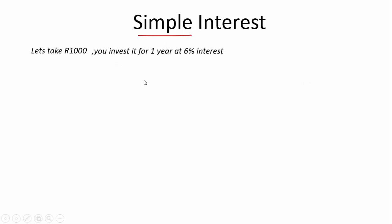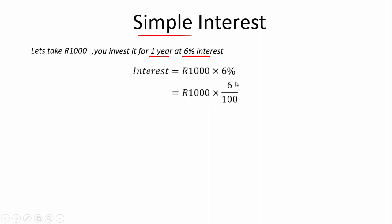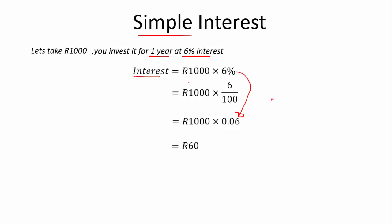Let's take 1,000 Rand and invest it for one year at 6% interest. So how much is going to be there after one year? The interest is going to be 1,000 Rand times 6%, which is 1,000 times 6 over 100, that's 1,000 times 0.06. You know how to get from a percent to a decimal. The interest gained is 60 Rand — it was simply 6% of 1,000 Rand.